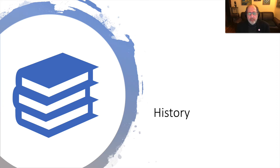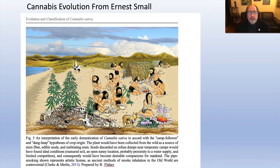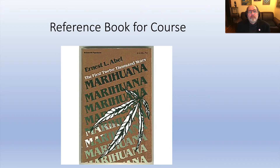The first module is History and Pre-recorded History. This is someone's imagination of how marijuana would have hung around with hunters and gatherers at some point in time. And this is a reference book for the course, available to you as a PDF — a book by Ernest Abel called The First 12,000 Years of Marijuana, which he gave permission to use.